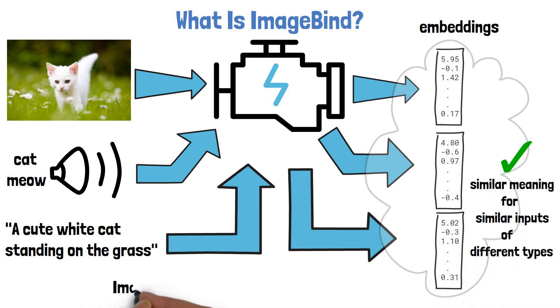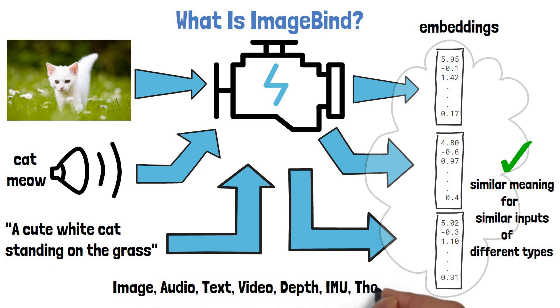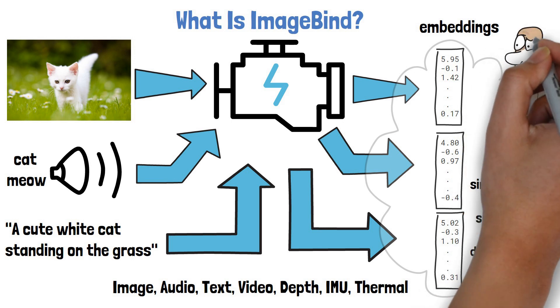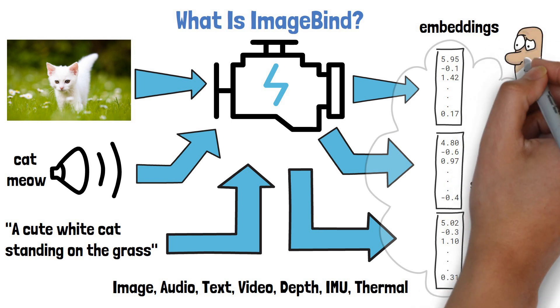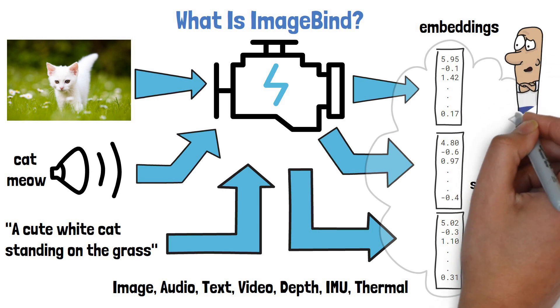In addition to image, audio, and text, the model can also understand video, depth sensor data, and IMU — which is a sensor that can tell when we tilt or shake our phone — and thermal data.